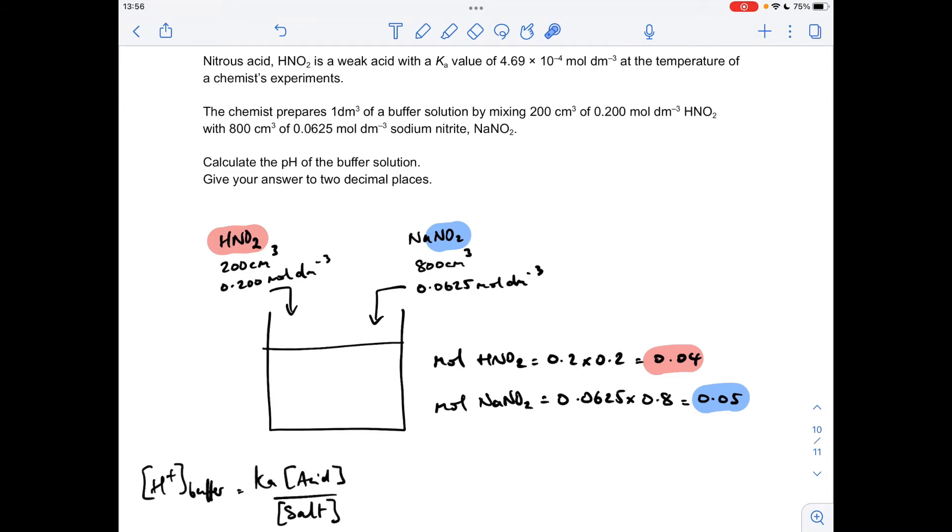So we'll bring in the Ka over salt expression now. So the H plus concentration of the buffer is the Ka of the weak acid multiplied by the acid concentration divided by the salt concentration. So there's the numbers there. Just remember that these moles are in one decimeter cubed anyway, so they're the concentrations as well.